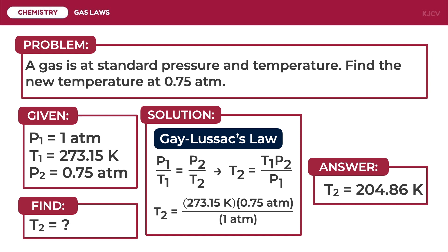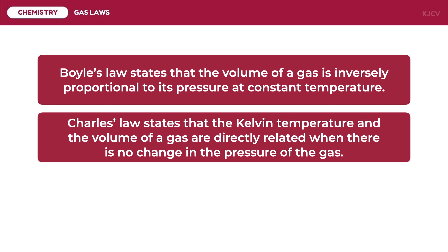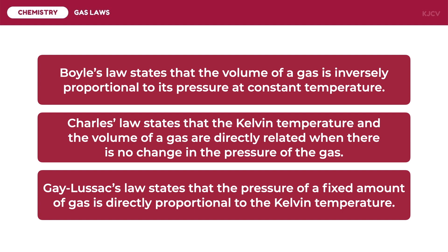Now that we have studied the three gas laws and their applications, let's review the key points. Boyle's law states that the volume of a gas is inversely proportional to its pressure at constant temperature. Charles' law states that the Kelvin temperature and the volume of a gas are directly related when there is no change in pressure. Gay-Lussac's law states that the pressure of a fixed amount of gas is directly proportional to the Kelvin temperature. That ends our discussion on gas laws.